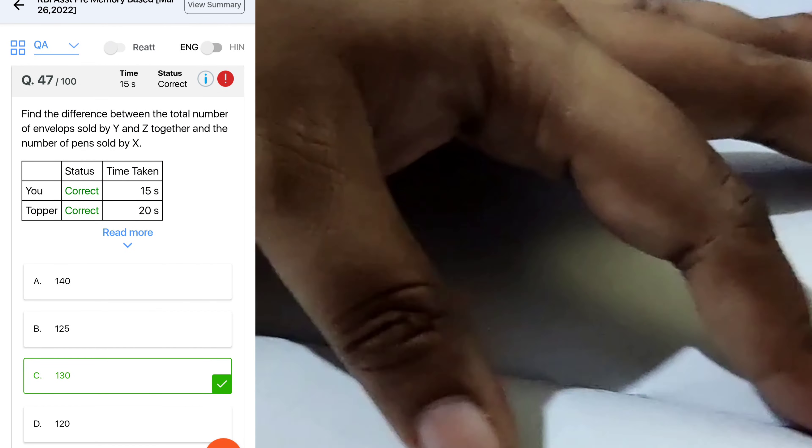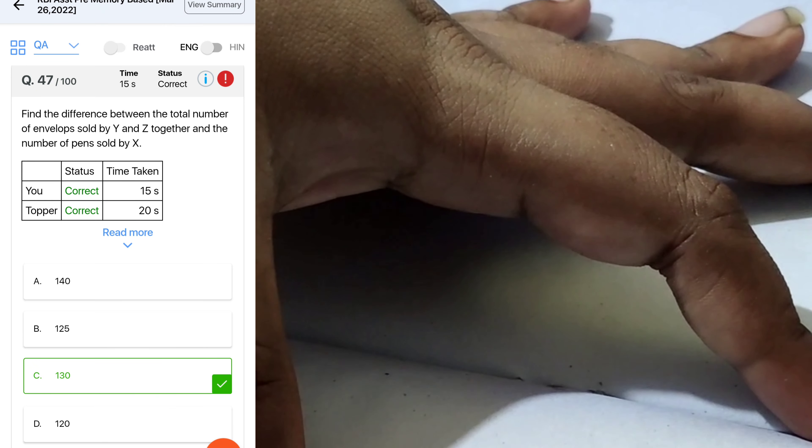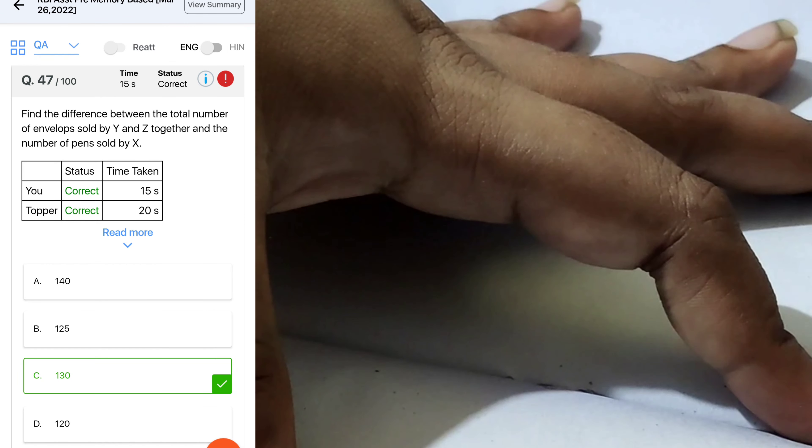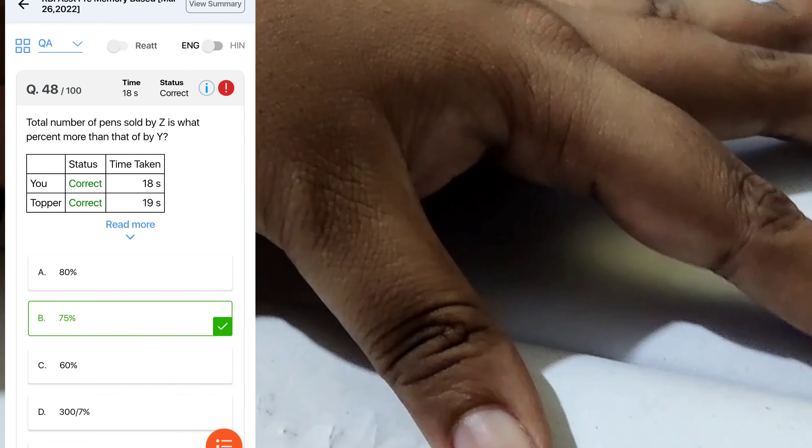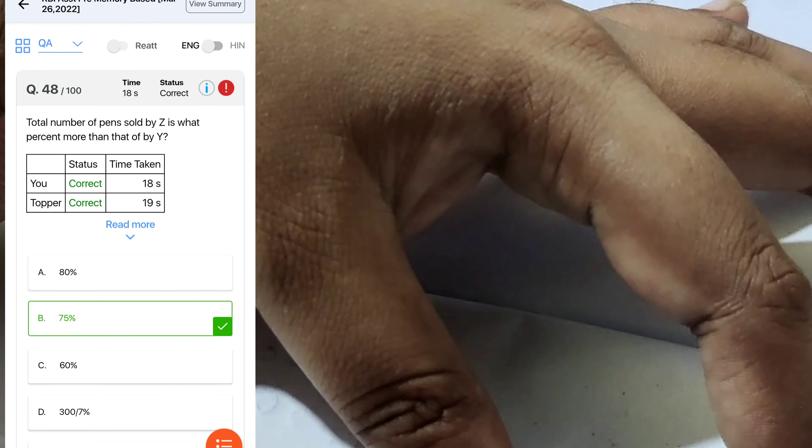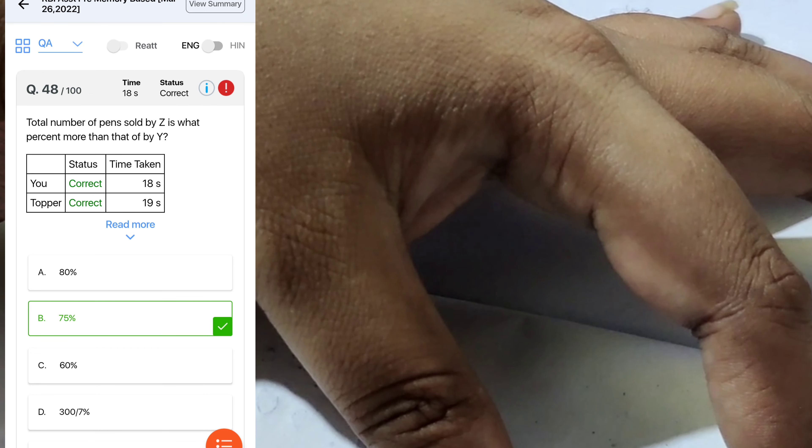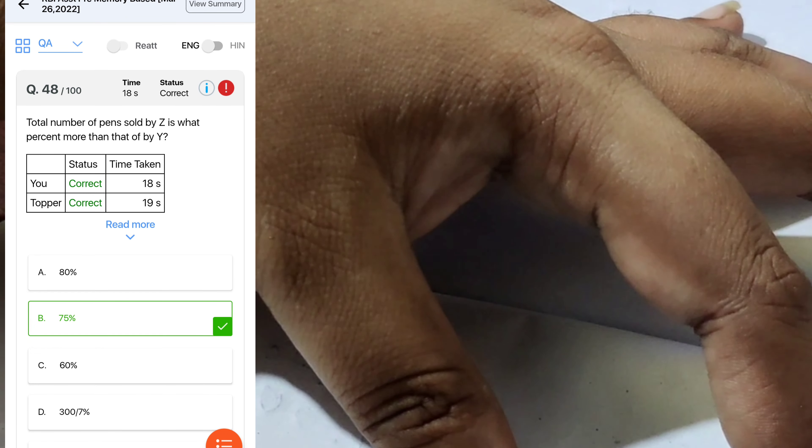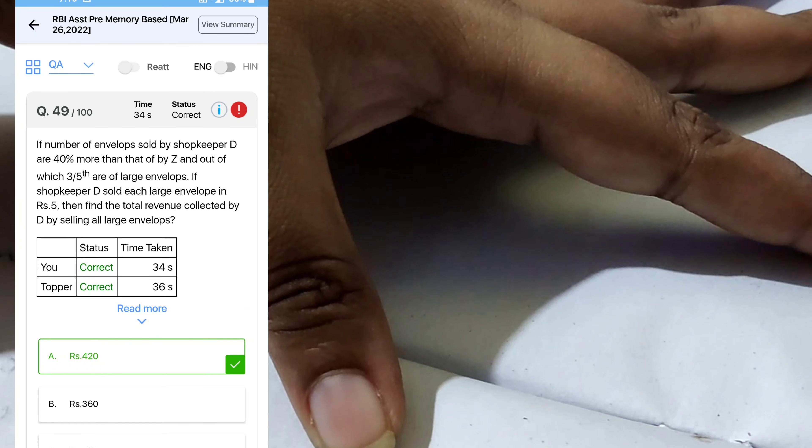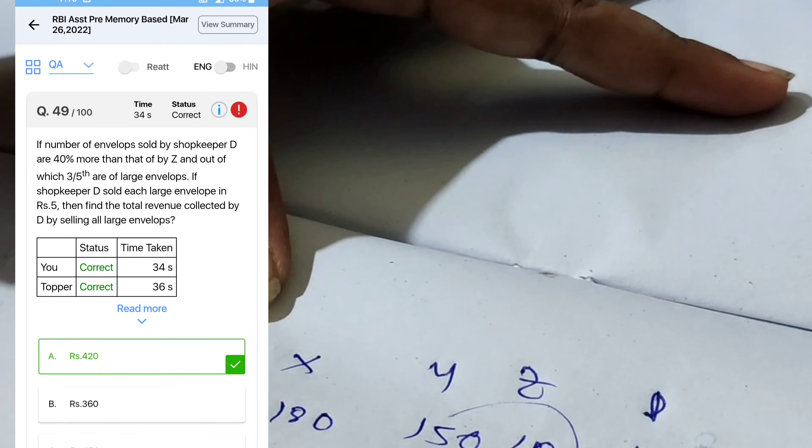Next question, find the difference between the total number of envelopes sold in Y and Z, 250, and pens of X, 120. Sorry, it's difference, 250 minus 120, it's 130 option. Next question, total number of pens sold by Z is 140, one percent more than Y. So 2060 more than Y, so 347, 75 percent.